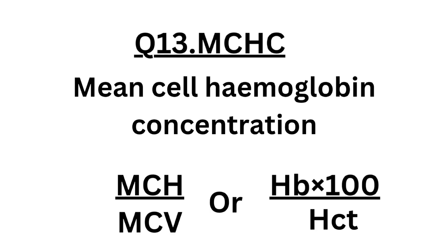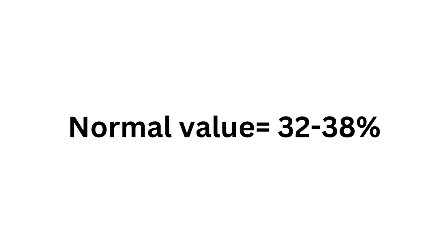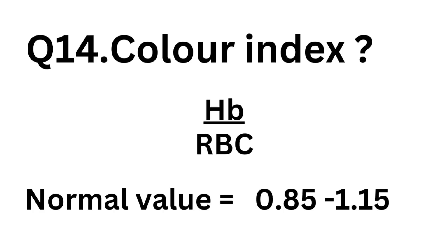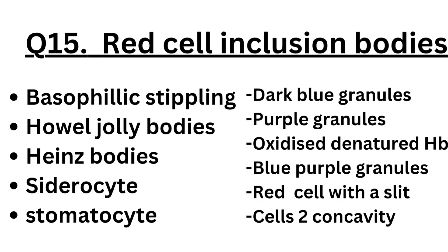MCHC — mean cell hemoglobin concentration. Formula: MCH divided by MCV, or Hb × 100 divided by PCV. Normal value: 30 to 38 percent. Question number fourteen: color index. Formula: Hb divided by RBC. Normal value: 0.85 to 1.15.